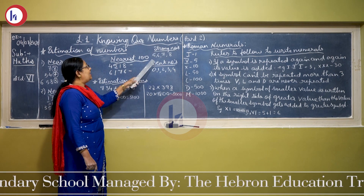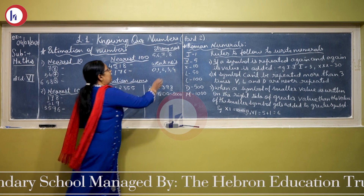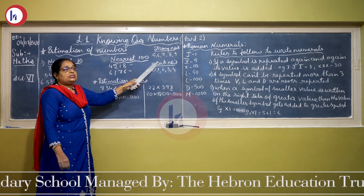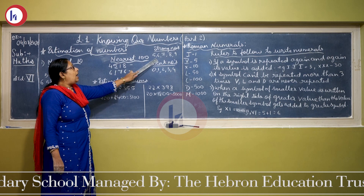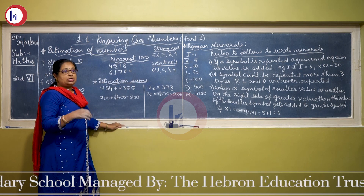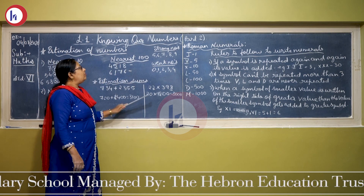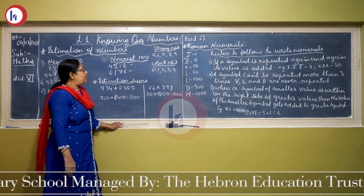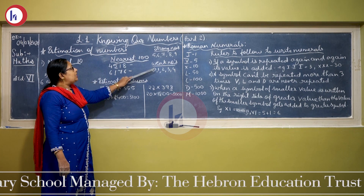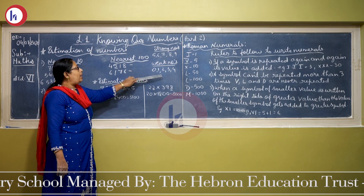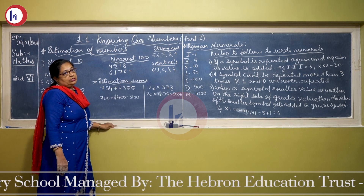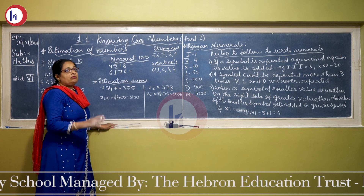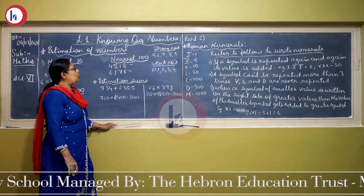Now we will put the numbers: 5, 6, 7, 8, and 9. These are the strong numbers. Strong numbers are the numbers which push the given number before them to the next number. Whereas weak numbers are: 0, 1, 2, 3, and 4. These numbers do not push the number — the value of the number remains as it is.